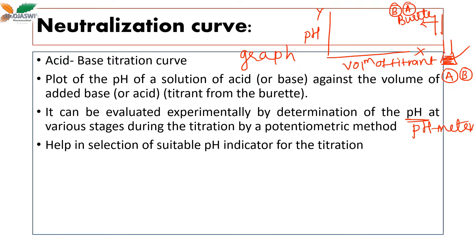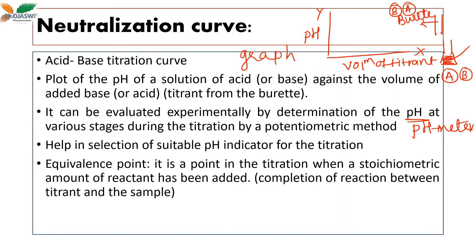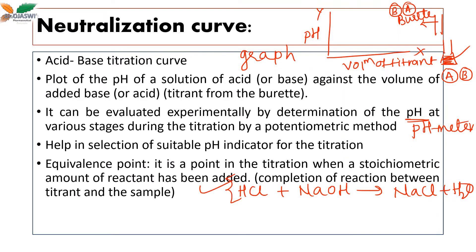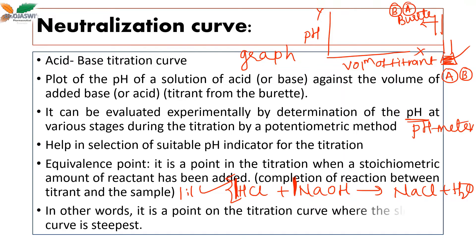This curve helps in the selection of a suitable pH indicator for the titration. The term equivalence point — we are quite aware of it. It is a point in the titration where a stoichiometric amount of reactant has been added. For example, 1 mole of HCl reacts with 1 mole of NaOH; the stoichiometric ratio is 1:1, meaning the reaction is complete.